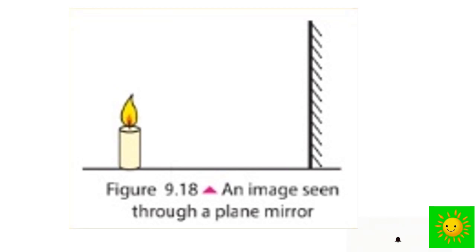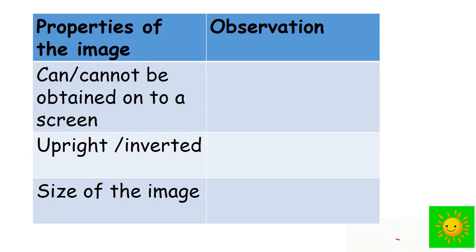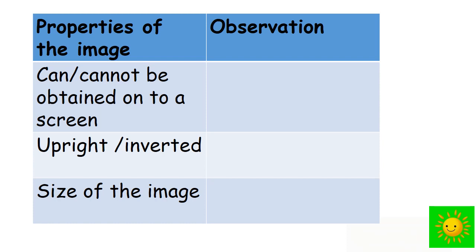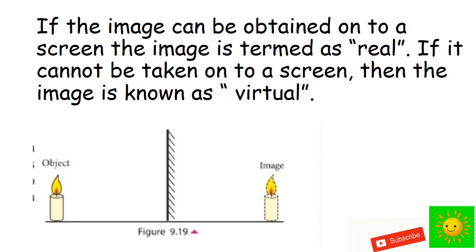See the observations of the nature of the image in this table. I have given you a table with properties of the image and the observation. The properties of the images are: can or cannot be obtained on the screen, upright or inverted, and the size. If the image can be obtained on the screen, the image is termed as real. If it cannot be taken onto a screen, then the image is known as virtual.